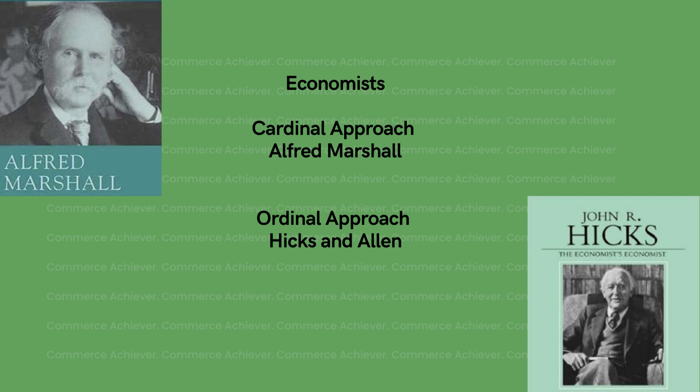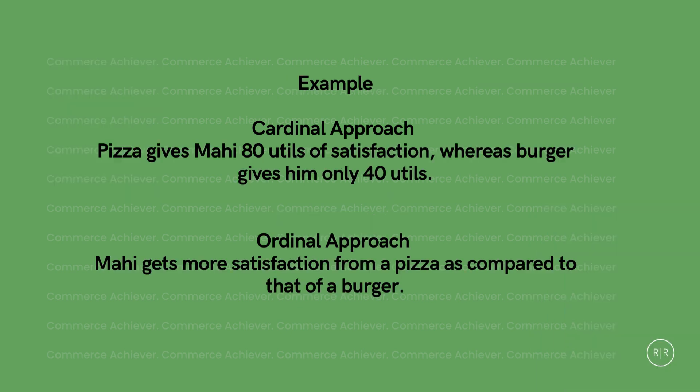Let us understand with examples. In the Cardinal Approach, which is quantifiable, we can express a specific quantity of satisfaction — for example, a pizza has 80 units of satisfaction while a burger has 40 units. We quantify and express it in numbers. In the Ordinal Approach, we would say we have more satisfaction from product X compared to product Y, but we cannot quantify it — we express it only in words.